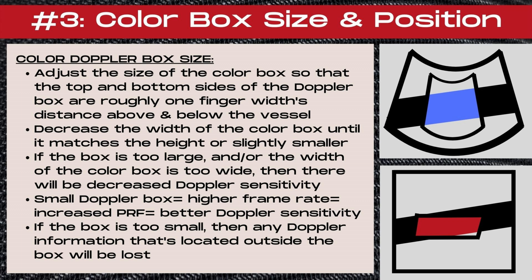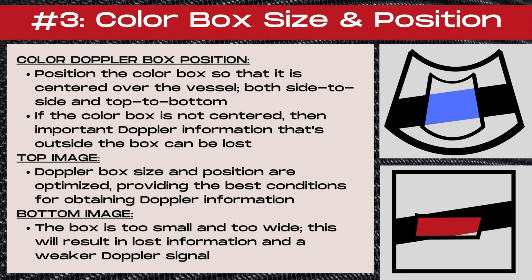A small Doppler box equals a higher frame rate, which means an increased PRF, which leads to better Doppler sensitivity. If the color Doppler box is too small, any information located outside the Doppler box will be lost. Position the color Doppler box so that it is centered over the vessel, both side to side and top to bottom. In the top image, the Doppler box size and position are optimized, providing the best conditions for obtaining Doppler information. In the bottom image, the box is too small and too wide, resulting in lost information and a weaker Doppler signal.